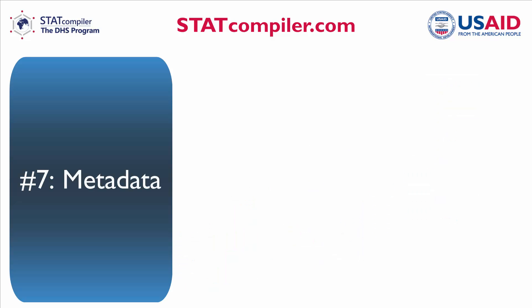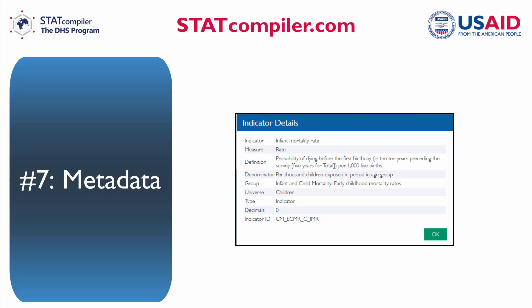Number 7. STATcompiler now includes metadata for each indicator, including the full indicator definition, the denominator, and the type of measure — for example, whether the indicator is a percent, a ratio, or a median.